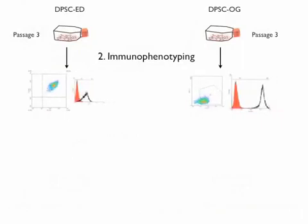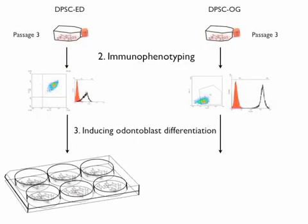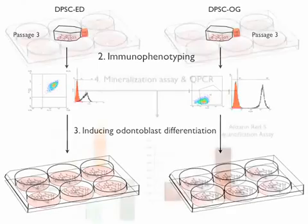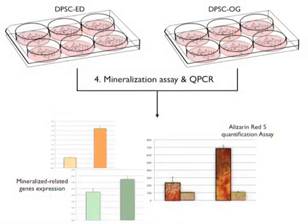The second step of the procedure is the identification of stem cells using flow cytometry. The third step is the induction of odontoblast differentiation. The final step is the comparative evaluation of odontoblast differentiation between the two groups by Alizarin red staining and QPCR.